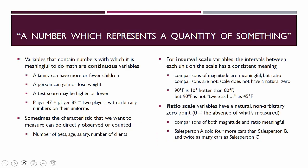Those are all the categorical variables. Then we have ones that contain numbers rather than labels — these are continuous variables. Variables that contain numbers where it's meaningful to do math with that number. A family might have more or fewer children; a person can gain or lose weight. The non-example here is a jersey number on a sports team — player 47 plus player 82 doesn't actually equal anything, they're just arbitrary numbers on uniforms. Numbers can be nominal, and jersey numbers are a really good example of that.